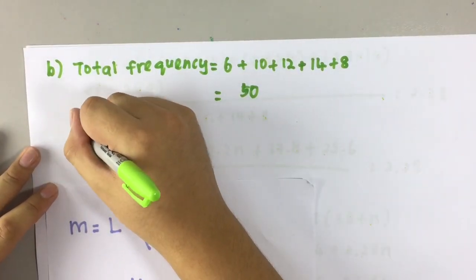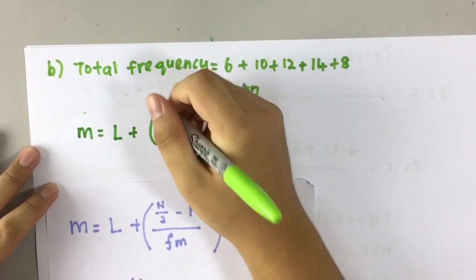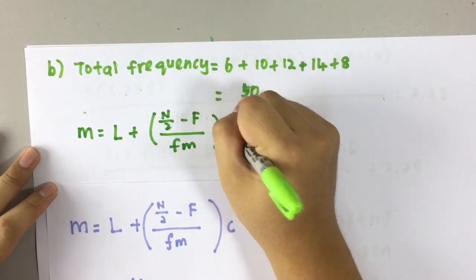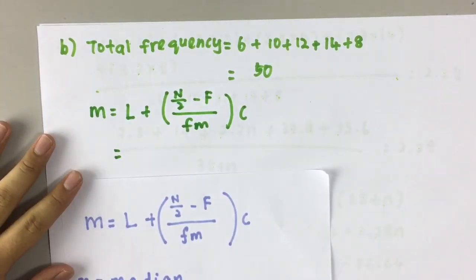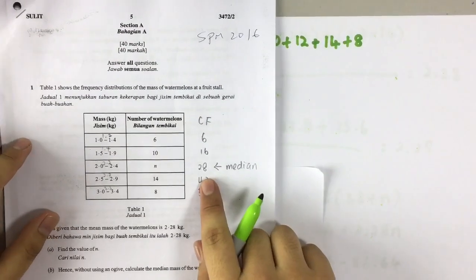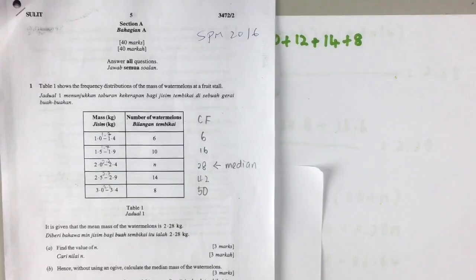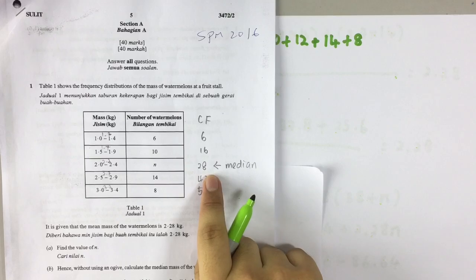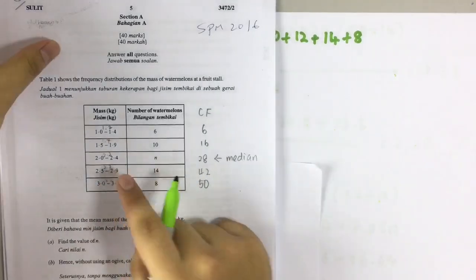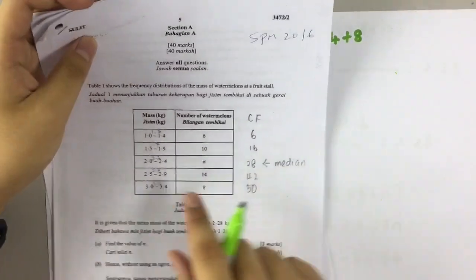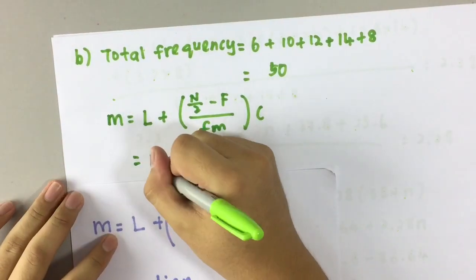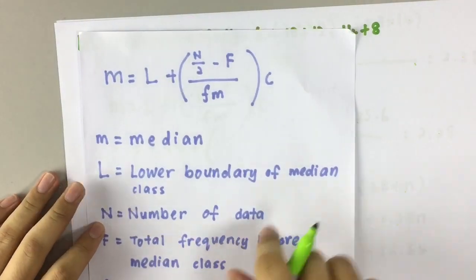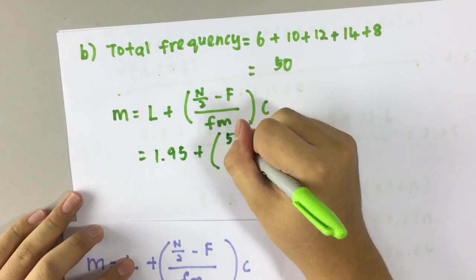Now, L refers to the lower boundary of the median class. Where does the median class lie? Here. Why? Because total frequency is 50, so median is 50 divided by 2, which is 25. 25 lies here. Lower boundary of the median class, 1.5.